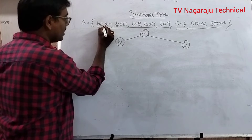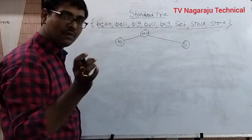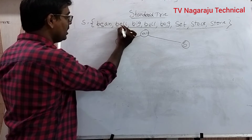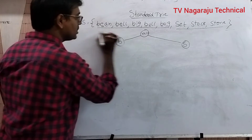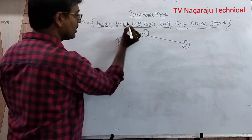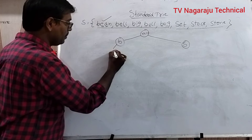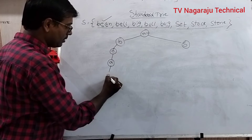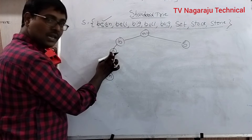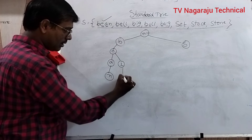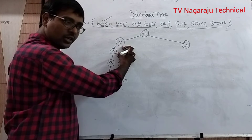Check the second character under B: we have E, E, I, U, U. E is the minimum. Under BE, we have two strings — search for the third character: A and L. A is smaller, so first we construct Bean (B-E-A-N), then Bell (B-E-L-L), where B-E is already constructed so we simply add L. These two strings share the common prefix BE, which is constructed only once.